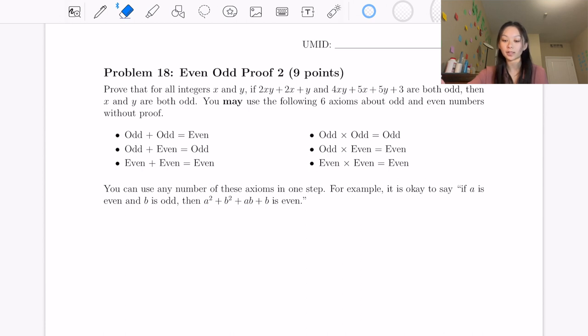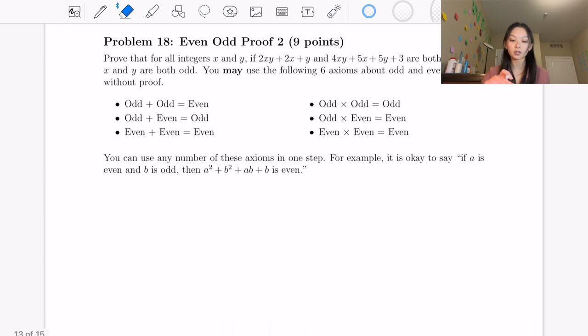Now we can use the following six axioms about odd and even numbers without proof. This just deals with the multiplication and addition of different odd and even combinations. Additionally, we are able to say that, for example, if a is even and b is odd and a squared plus b squared plus ab plus b is even, steps like this are going to be allowed where you can combine all these different rules into one line in the proof.